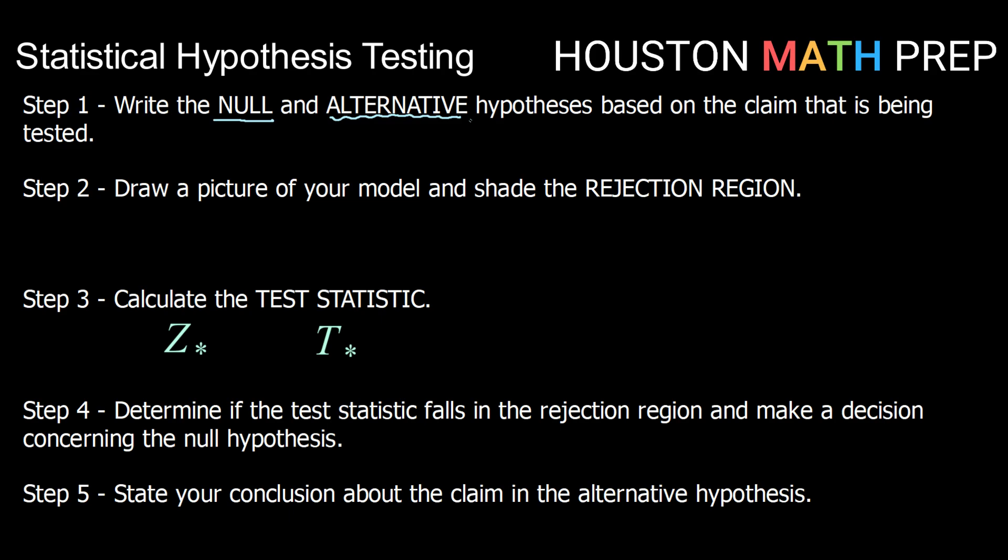Once we have our hypothesis statements, we can draw a picture of our model and shade what we would call rejection regions. So depending on what parameter we're working with, we're either going to be working with a standard normal model or a student t distribution. But either way, we know that those look approximately mound-shaped.